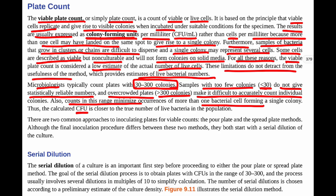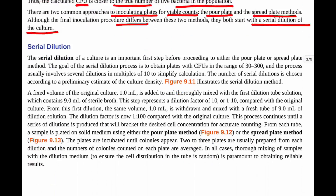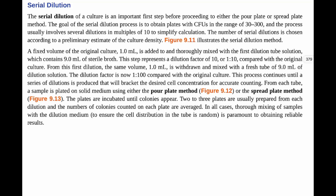There are two common approaches to inoculating plates for viable counts: the pour plate method and the spread plate method. Both start with a serial dilution of the culture, which is an important first step. The goal of the serial dilution is to obtain plates within the 30 to 300 colony range — CFUs in the range of 30 to 300 — so the count is accurate and statistically meaningful.